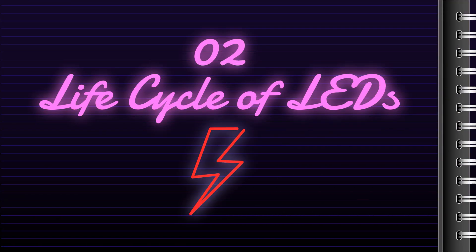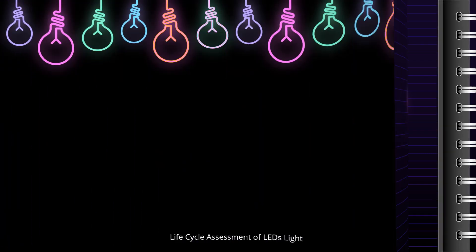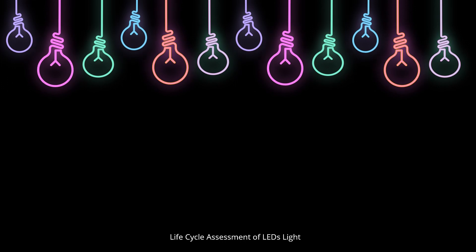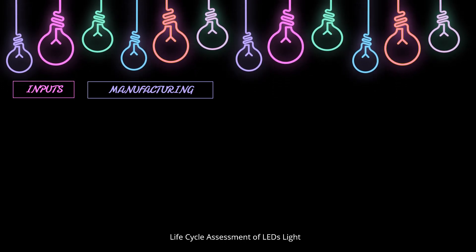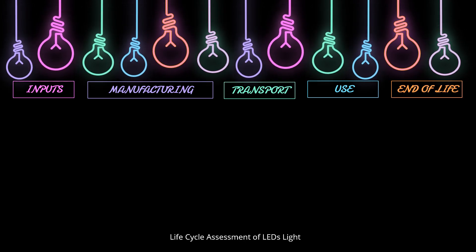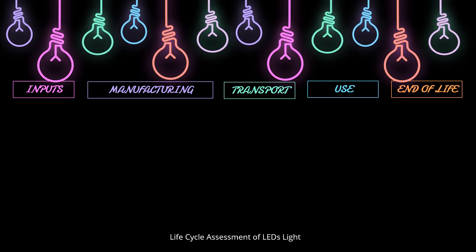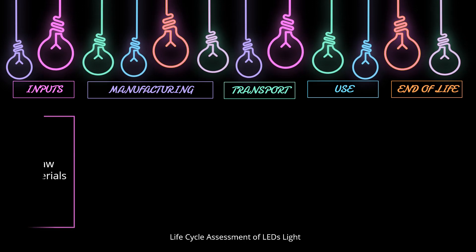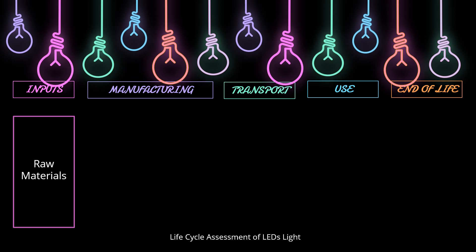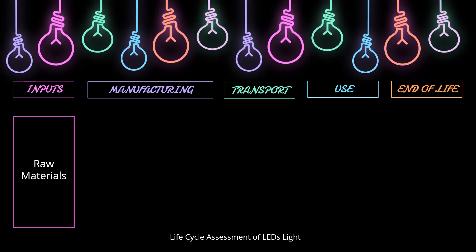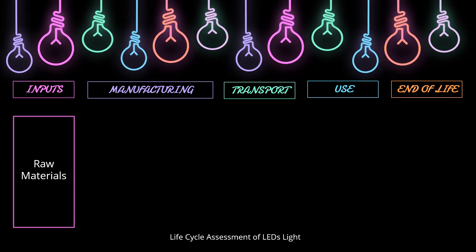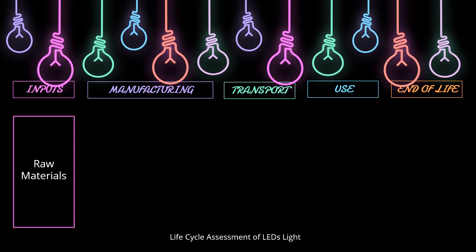Now we will talk about the life cycle of LED. There are five life cycle stages: raw materials, manufacturing, transportation to point of sale, use of the product, and end-of-life disposal and recycling. Many products are made up of multiple components, and lamps are no exception. This first stage of the life cycle accounts for the emissions and resource usage associated with the production and transport of the various raw materials and intermediate products that are inputs to the final product.